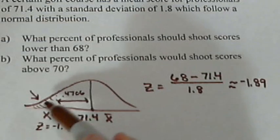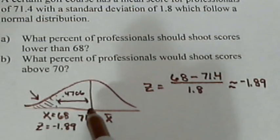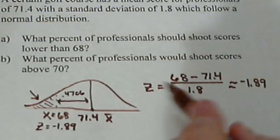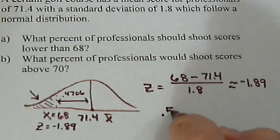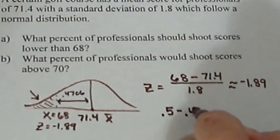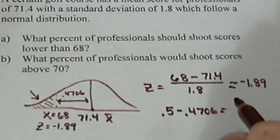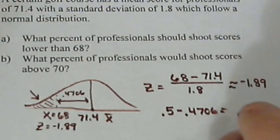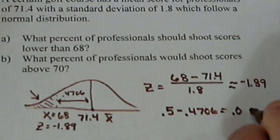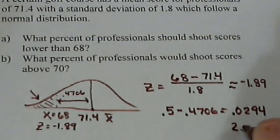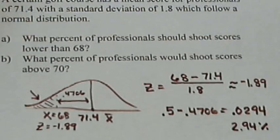Now that's not the percent we want. We want this piece over here. So how do I find that? Well, from the mean all the way to this edge, that's 50%. And if we take away from 0.5, 0.4706, what we get is 0.0294. Or about 2.94%, about 3% of the golfers would shoot lower than 68.